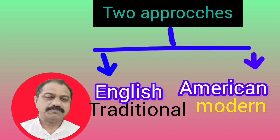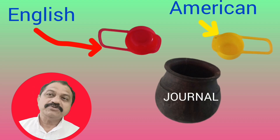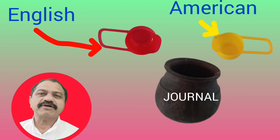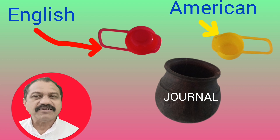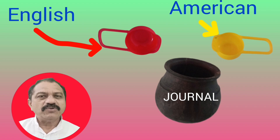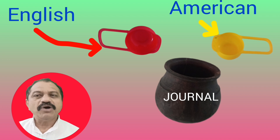The modern approach is the American approach, whereas the traditional approach is the English approach. You can use either the traditional approach or the modern approach for journalizing transactions. Which method you are using is immaterial — it is just like using cups of different colors for drinking water from the same pot. Whether you are using traditional or modern approach, the result will be the same.